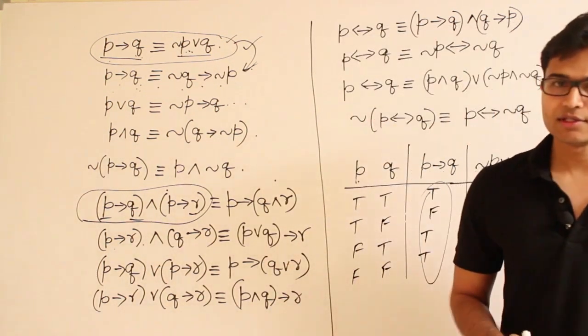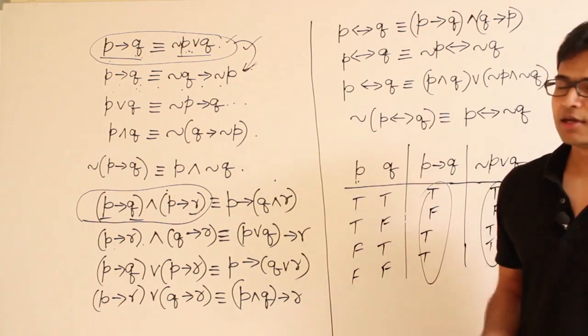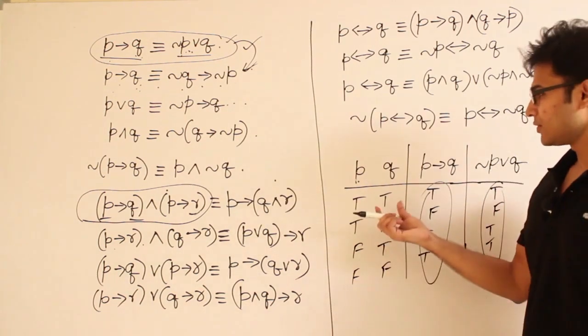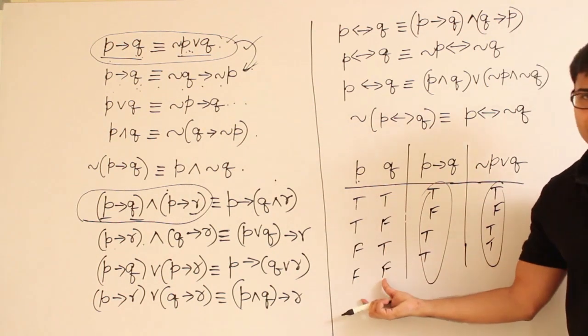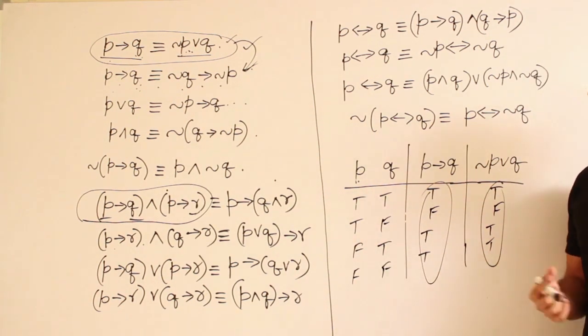So, even in the exams, I have never seen any question involving more than three variables. Therefore, if there are three variables, you can just write three tables, I mean, eight rows and then solve it.